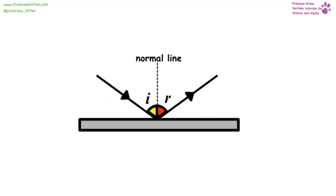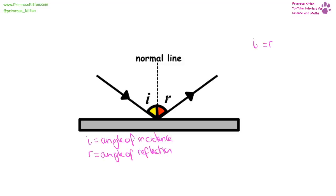When a wave is reflected, it comes in, meets the boundary, and reflects off. The angle of incidence always equals the angle of reflection — I equals R. The normal line is a dashed line drawn at 90 degrees to the surface being reflected off. If a sound wave is reflected, we get an echo.